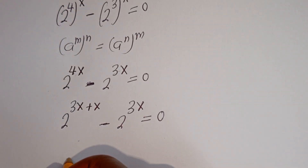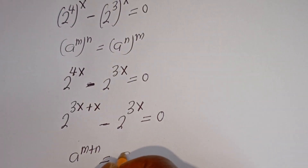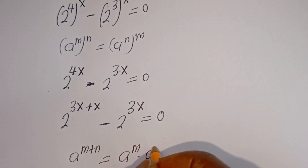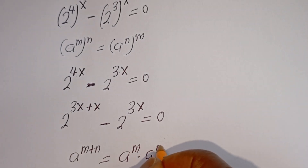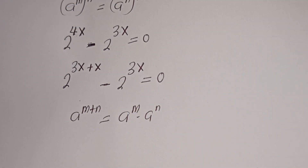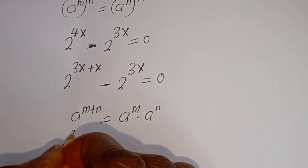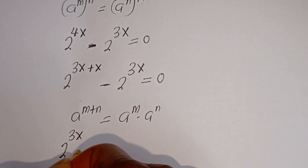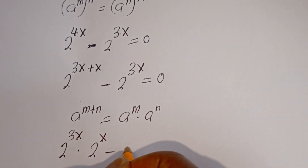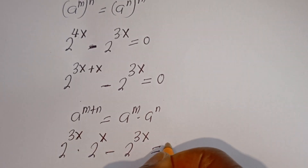Take note that if you have a to the power of m plus n, this is equal to a to the power of m multiplied by a to the power of n. Then this can be written as 2 to the power of 3x multiplied by 2 to the power of x, minus 2 to the power of 3x, is equal to zero.